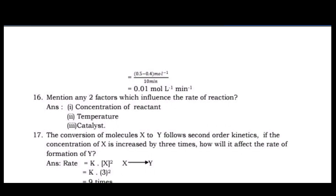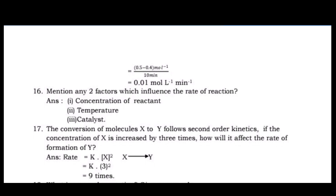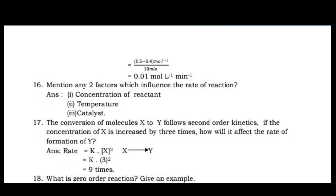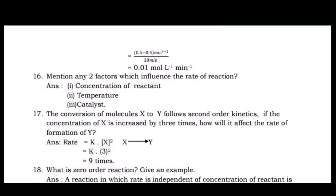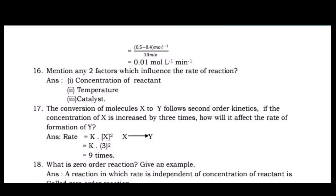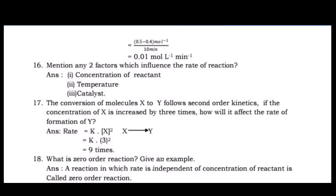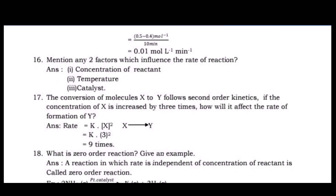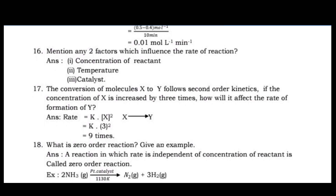Question 17: The conversion of molecules X to Y follows second order kinetics. If the concentration of X is increased by 3 times, how will it affect the rate of formation of Y? Answer: Rate = K[X]². New rate = K[3X]² = 9K[X]², so rate increases 9 times.